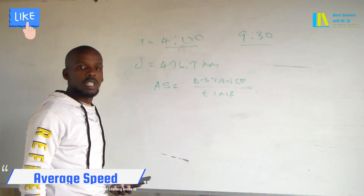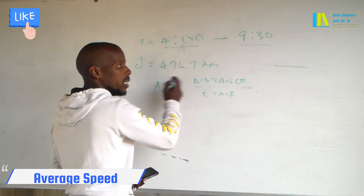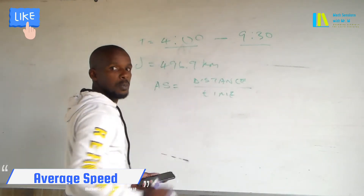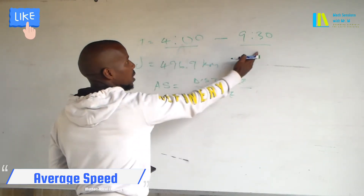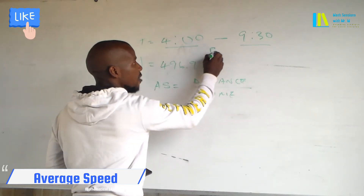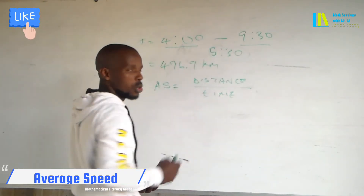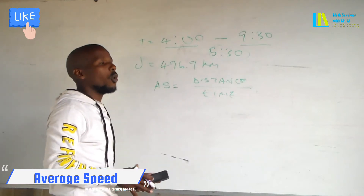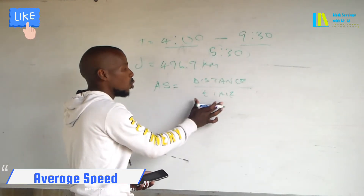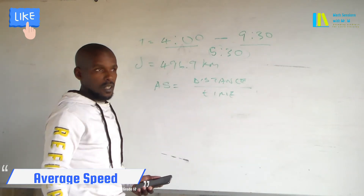First, you need to find the difference between the arrival and departure time. Between 9:30 and 4am there is a 5 hour 30 minute window, and that is what you are going to use when calculating the average speed.